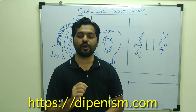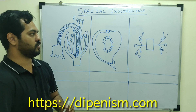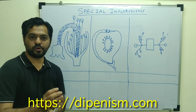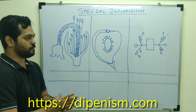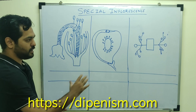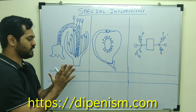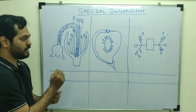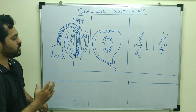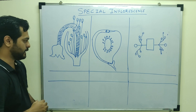In this segment we are going to discuss certain special inflorescence. What I want you to do is first pause this diagram so that you can understand the main labelling. So there are three types of special inflorescence.